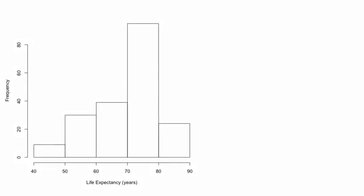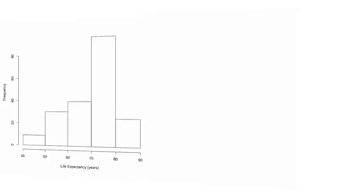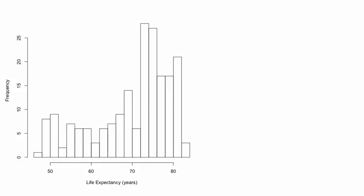The width and number of bins in a histogram can be any convenient value. However, it is possible to dramatically change the appearance of a histogram with the choice of bin size, particularly when the number of data values is small. As an example, if we change the bins to cover only a 2-year span, the life expectancy histogram appears to be more noisy, with more variation in the frequencies among bins.